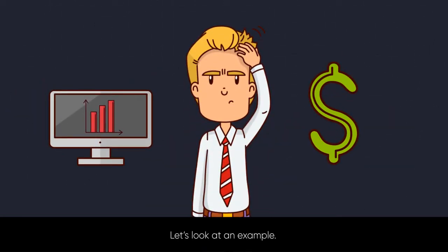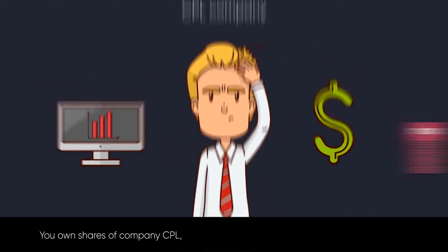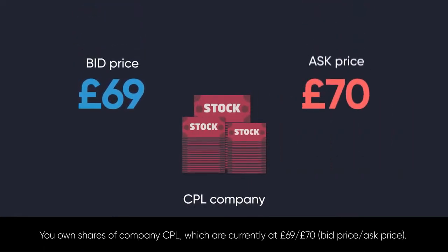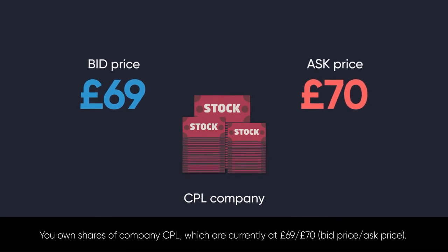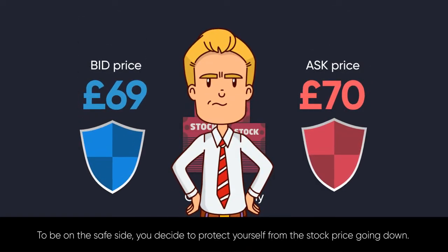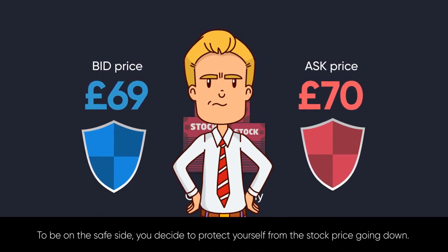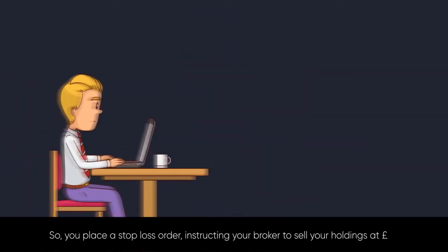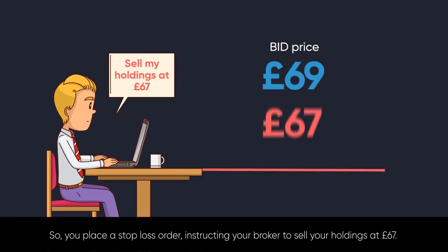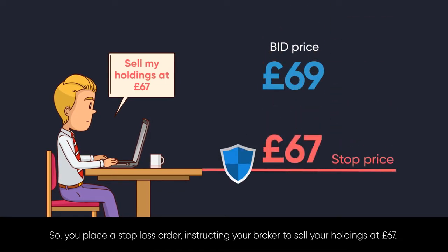Let's look at an example. You own shares of company CPL which are currently at £69 bid price and £70 ask price. To be on the safe side, you decide to protect yourself from the stock price going down, so you place a stop loss order instructing your broker to sell your holdings at £67.